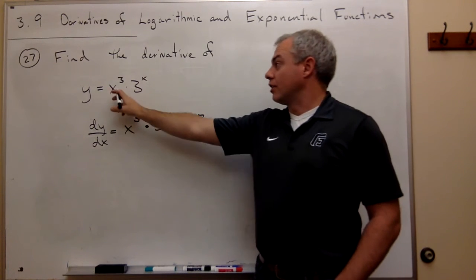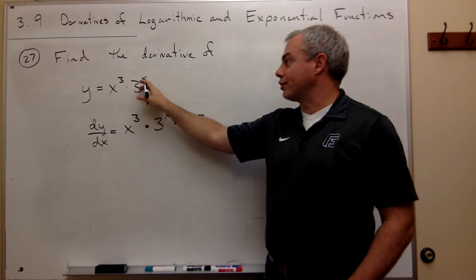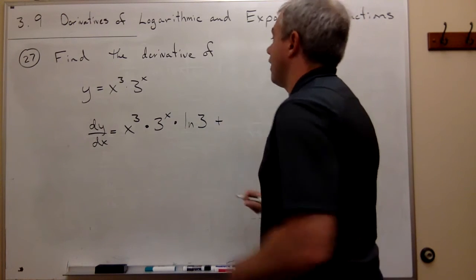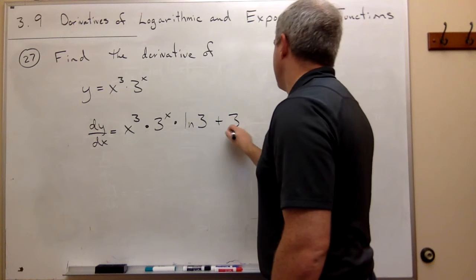So we've got the first thing was x cubed times the derivative of 3 to the x, which is 3 to the x times ln of 3, plus, now I need to take the second function, leave it alone, so 3 to the x, times the derivative of the first guy.